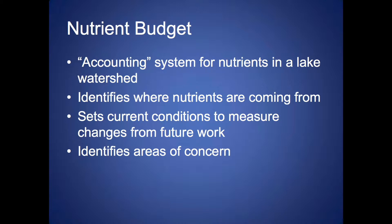The nutrient budget sets the current conditions so that we can measure changes for future work. When you start implementing best management practices in the watershed or other techniques to reduce nutrient concentrations, you want some way of measuring how much you've reduced the nutrient input into a lake. It also identifies areas of concern — where the highest amount of nutrients are coming from.